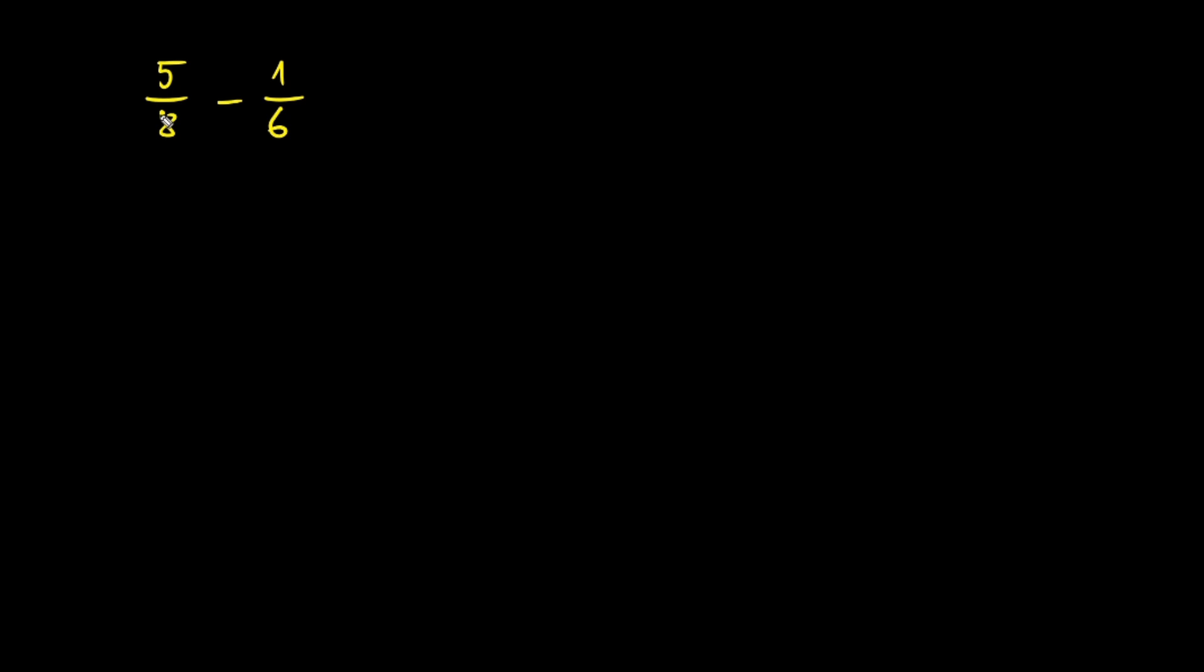To subtract these two fractions, we need to find a common denominator. An easy way is to multiply the two denominators. 8 times 6 is 48. This may not be the least common denominator, but it works.